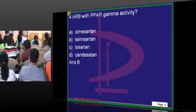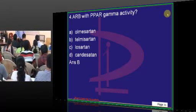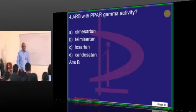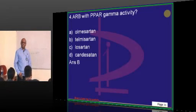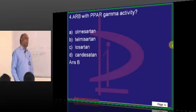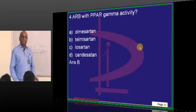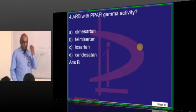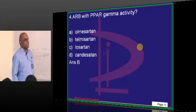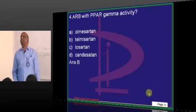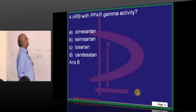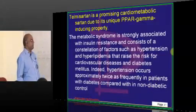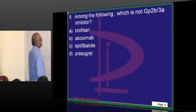Telmisartan is the answer. Once upon a time, losartan used to be a routine practice - Lozar H. Probably 50,000 prescriptions we would have written on Lozar H. Then telmisartan has taken over because of certain extra points it scores over other ARBs. One question invariably is asked about this.